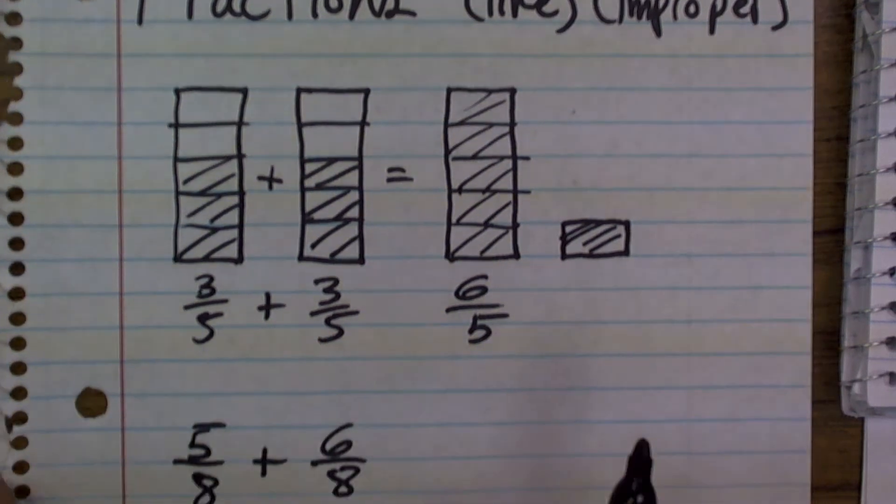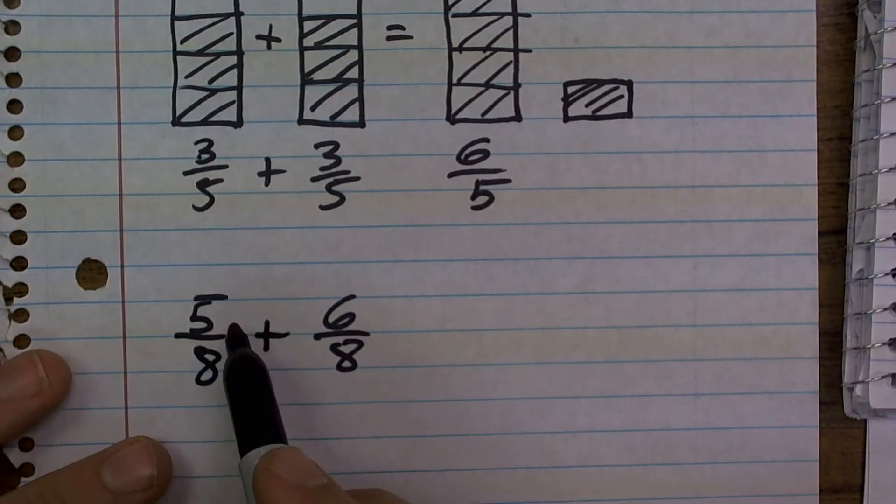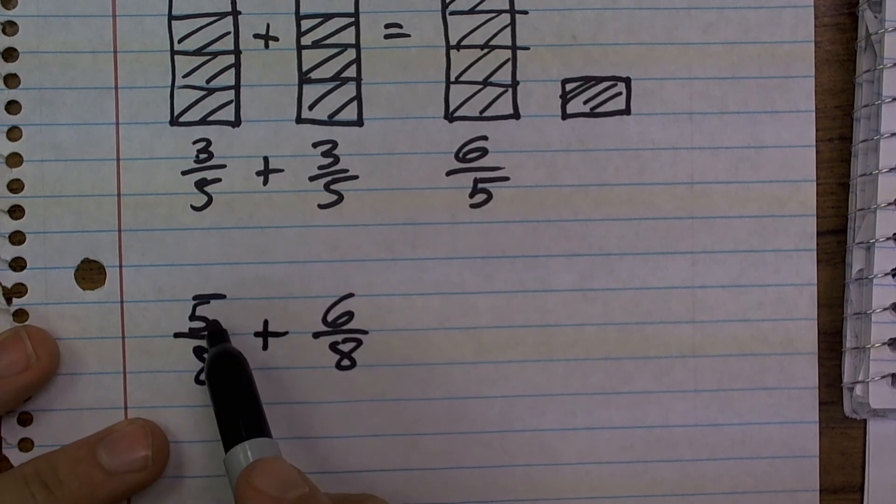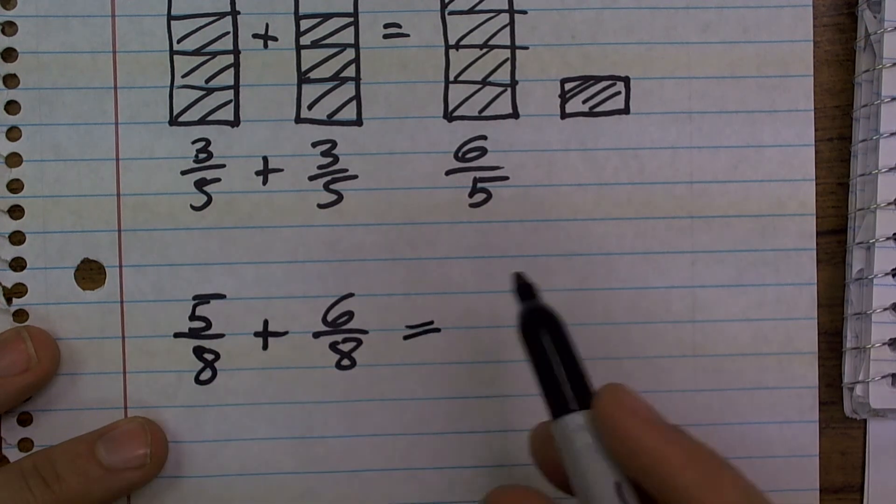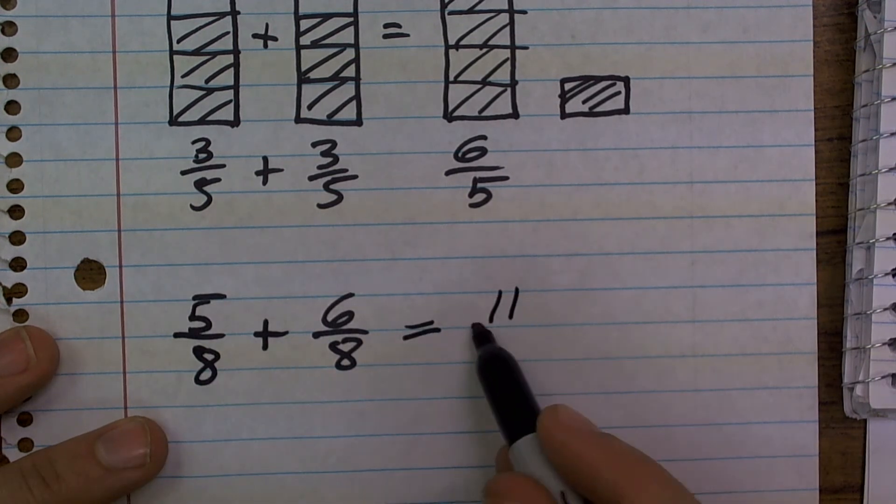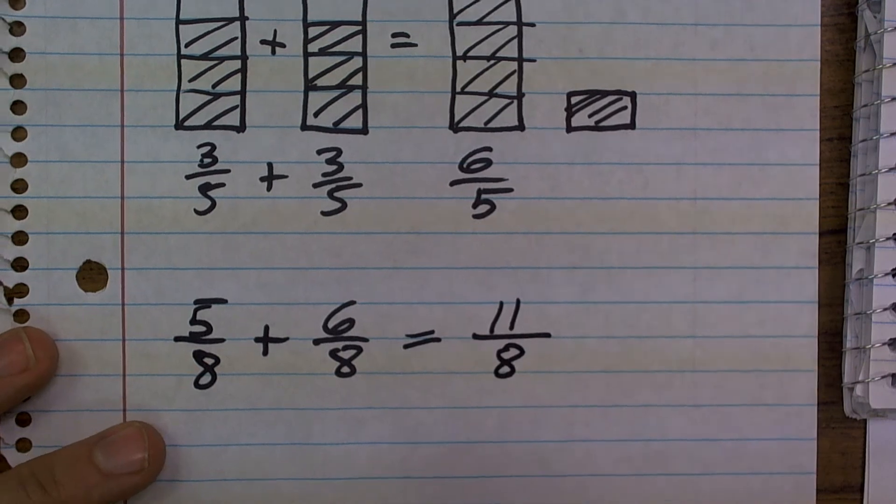So let's look at another example of an improper fraction, or an improper fraction as an answer. So here I have 5 eighths plus 6 eighths. Remember, just add the tops, keep the bottoms the same. So 5 plus 6 is going to give me 11 all over 8.